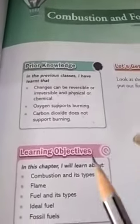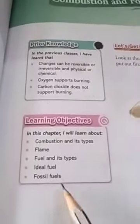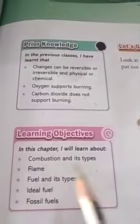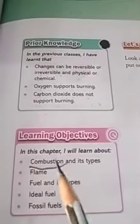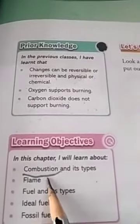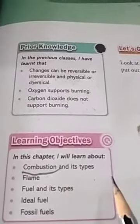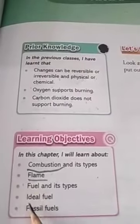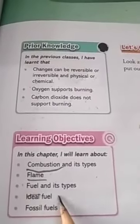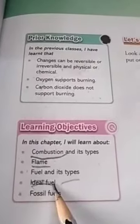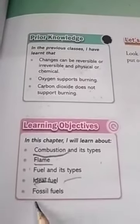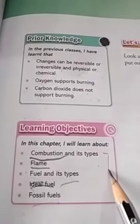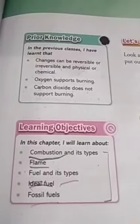What you are going to read in this chapter is Combustion and its types — combustion means burning, burning of materials and types of it. Flame and fuel and its types. What is the ideal fuel and what are the fossil fuels — we will learn all of these in this chapter.